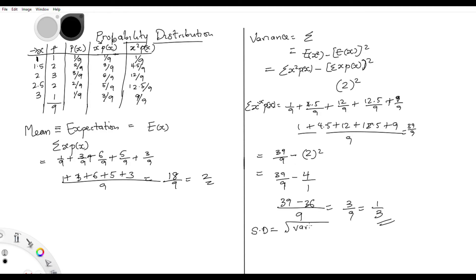And we want to get the standard deviation — very simple. Standard deviation equals the square root of the variance. So standard deviation = √(1/3). That's all there is to probability distributions.